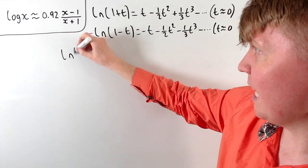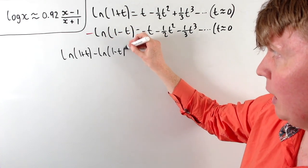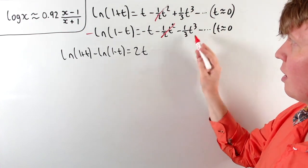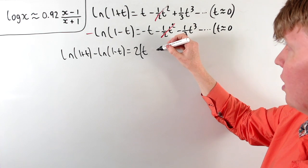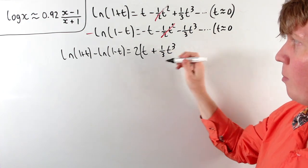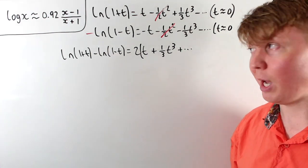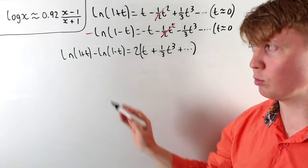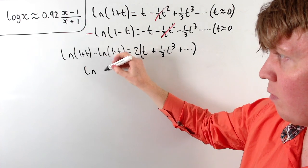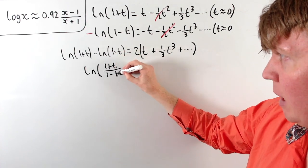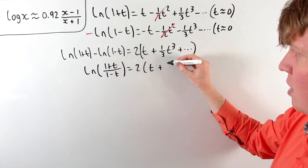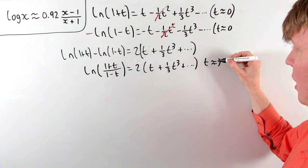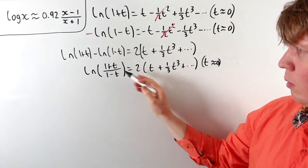Something really interesting happens if we subtract the second series from the first: ln(1 + t) minus ln(1 minus t). The t terms give 2t, the squared terms cancel, and we get 2/3 t cubed, then 2/5 t to the fifth, and so on. Using the laws of logarithms, this equals ln((1 + t)/(1 minus t)), giving the expansion 2 times (t plus one-third t cubed plus one-fifth t to the fifth and so on), again good for t near 0.